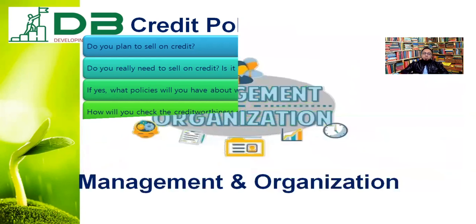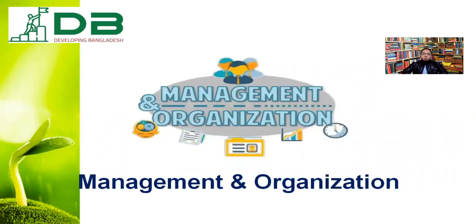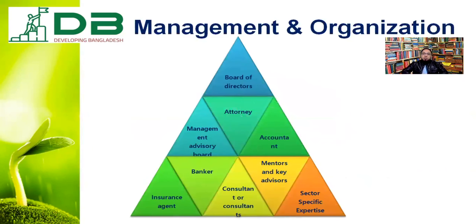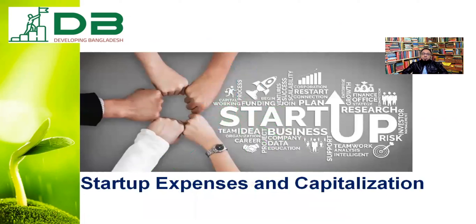Please describe this in your business plan. For the management and organizational plan, if you would like to draft a specific business plan, then obviously you have to determine and mention what would be the size of your board of directors, how you will operate the business, what would be your operating principal, and who will be a member of your advisory board, if any. Also include your accounting procedures, who will be your banker, which bank you would like to use, who will be your insurance company, who will be your consultant, or in which specific segment you will lead the market. Please try to mention all this management and organizational perspective in your business plan.